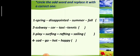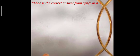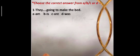Number five: smaller, larger, faster, slowest. Smaller, larger, and faster — we use them to compare between two things. But 'slowest' we use to compare between one and the group, so it is the odd one. The replacement will be 'slower.'